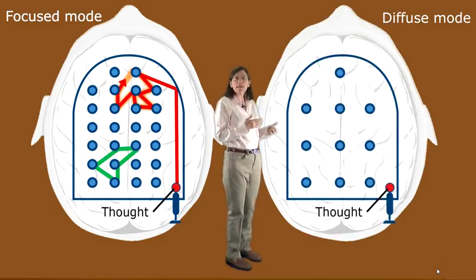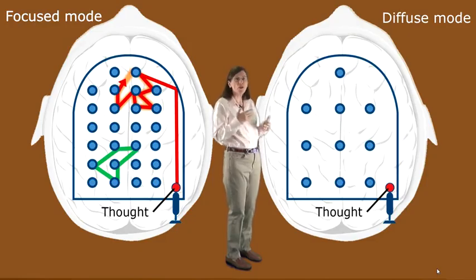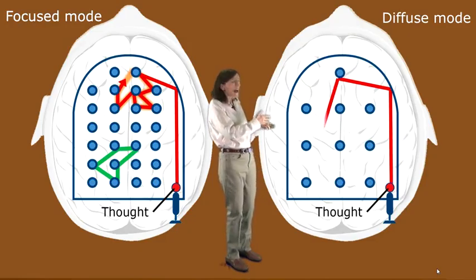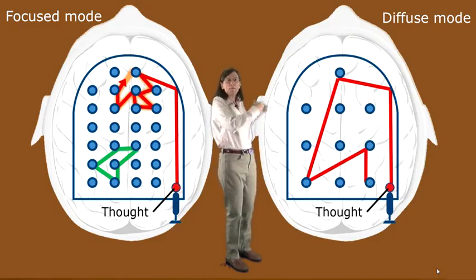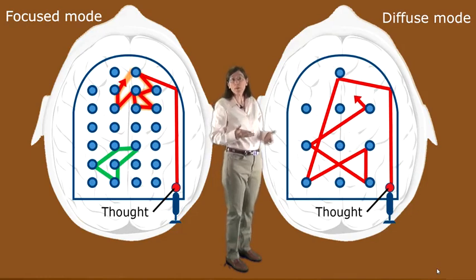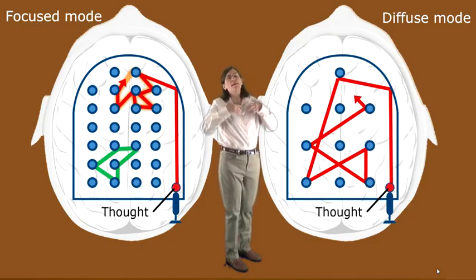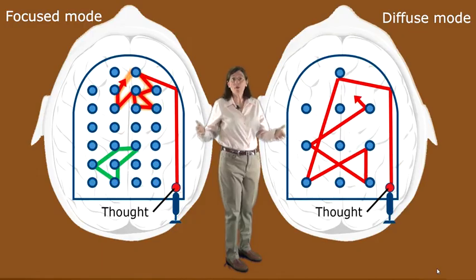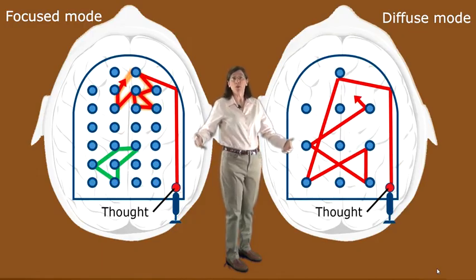Look at how widely spaced the rubber bumpers are. Thought takes off. Look at how it moves widely, bounces around. It can travel a long way before being interrupted by hitting a bumper. In this diffuse mode of thinking, you can look at things broadly from a very different, big-picture perspective.